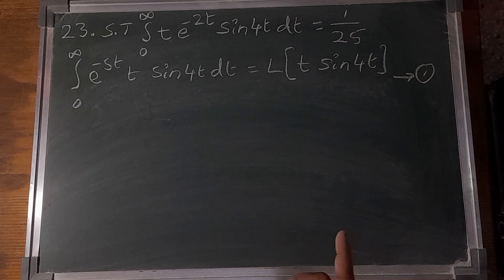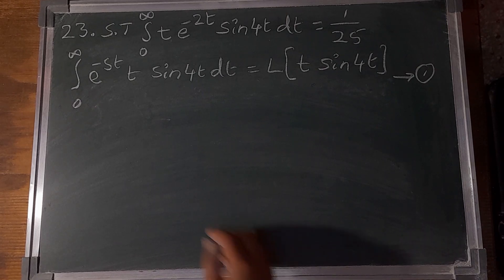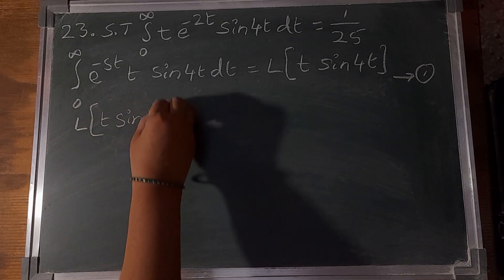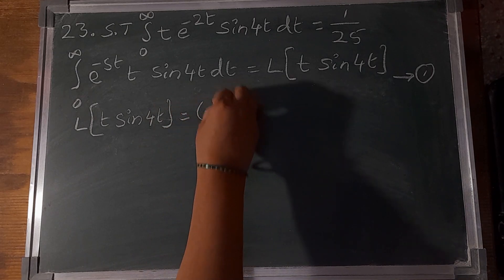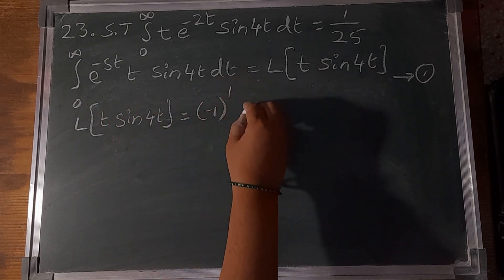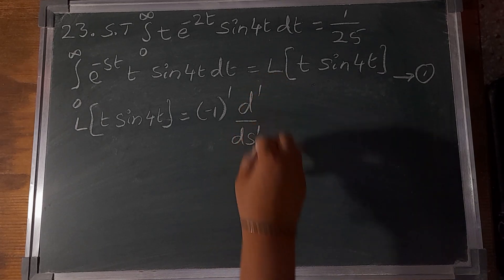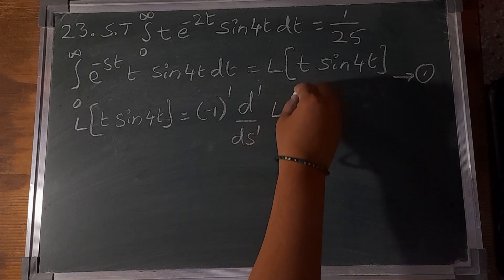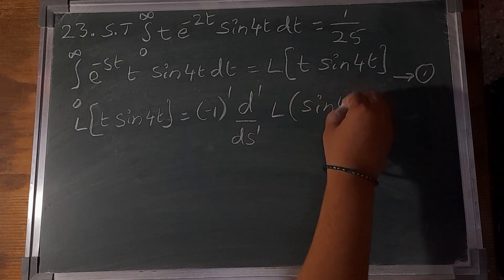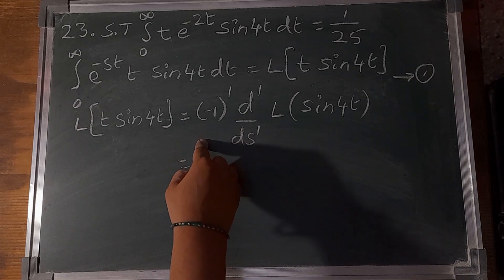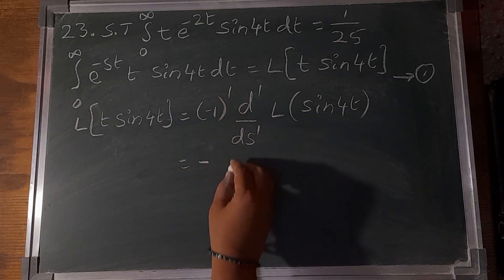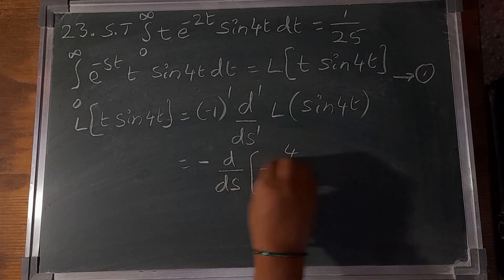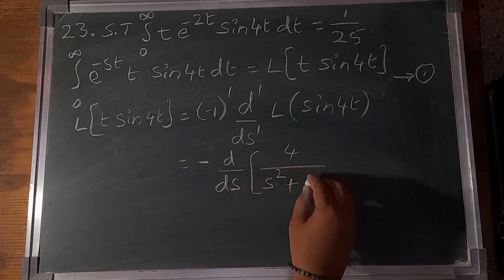Using the second property of the Laplace transform, L{t sin(4t)} = (-1)¹ d/ds [L{sin(4t)}], where n = 1 (an odd number, giving a negative sign). The Laplace transform of sin(4t) is 4/(s² + 16). So we differentiate: minus d/ds of 4/(s² + 16).